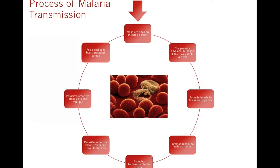The parasites enter the bloodstream of the human and travel to the liver. In the liver, the parasites live in the liver cells from a week up to multiple years. During this time, they multiply in number and grow. Once they are ready to leave, the parasites enter back into the bloodstream and infect the red blood cells, or erythrocytes.